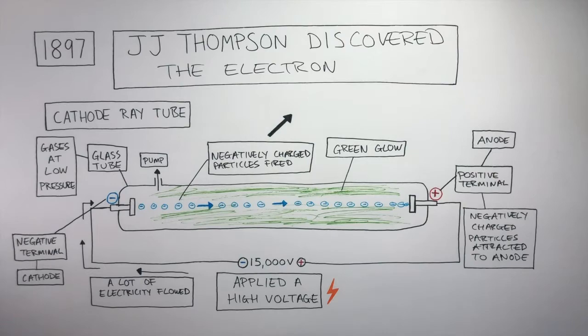J.J. Thompson realized these negatively charged particles must have been negative because they flowed from the negative terminal and were attracted to the positive terminal. He also realized the green glow was due to these negatively charged particles being very excited, and they must have come from the gases in the glass tube.